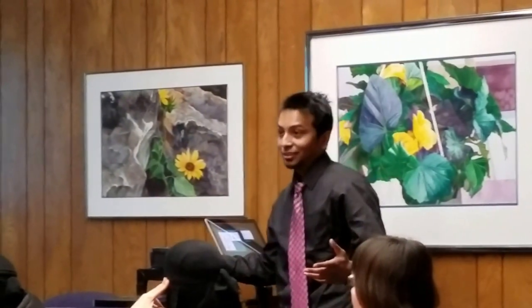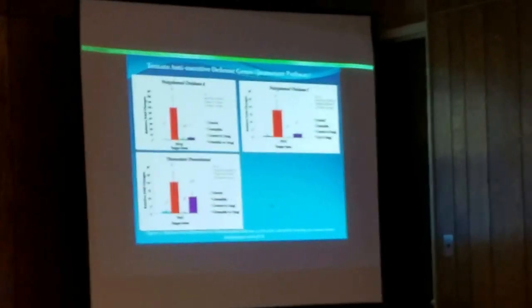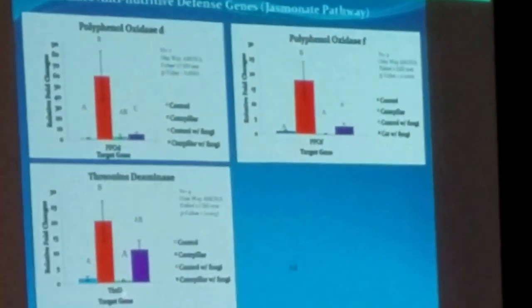This is threonine deaminase. As the name implies, it catalyzes threonine, another important amino acid in the caterpillar's diet. If it destroys those amino acids, the caterpillar will not be able to digest them and will suffer from nutrient deficiency. Again, the same trend: caterpillar up-regulates and fungi down-regulates it.